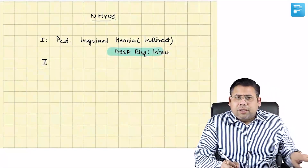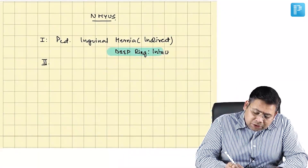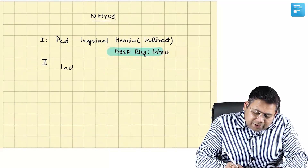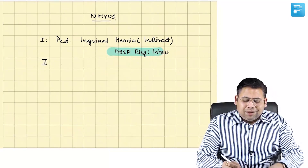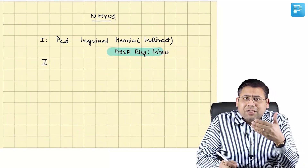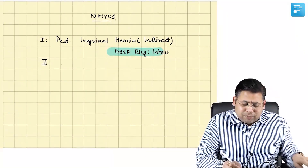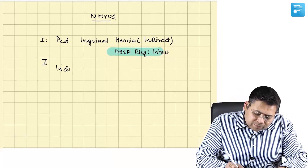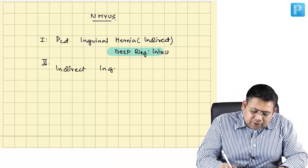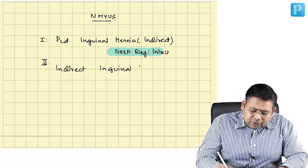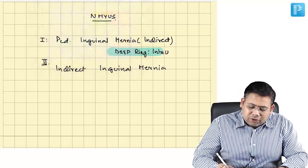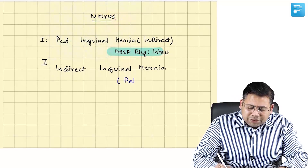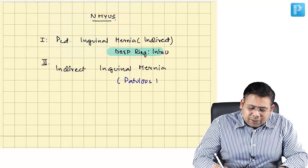Type 2 is also an indirect inguinal hernia, but the pathology is at the level of the deep ring — a patulous deep ring.